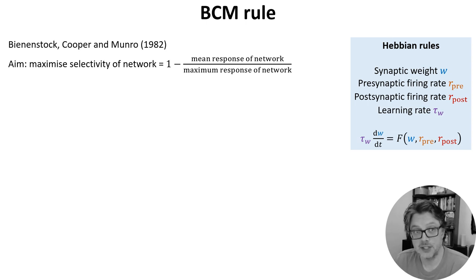They define this as 1 minus the mean response of the network divided by the maximum. In other words, for high selectivity, overall the network should respond very little, but for certain inputs it should have a very strong response. Their rule multiplies the simple Hebbian rule from before with a term that can be positive or negative. It's positive if the postsynaptic firing rate is high, and negative if it's low.